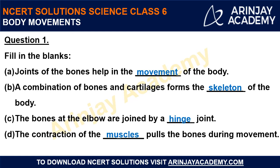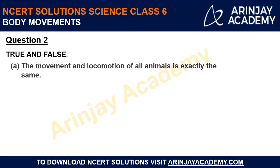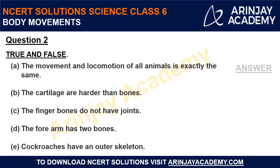We are done with question one. Question 2: True and False. The first statement says the movement and locomotion of all animals is exactly the same. Movement means displacement of any body part from its original position, whereas in locomotion the whole body displaces from one place to another. This is false because movement and locomotion of animals depends upon their body structure. Animals with different body structures possess different modes of movement and locomotion.